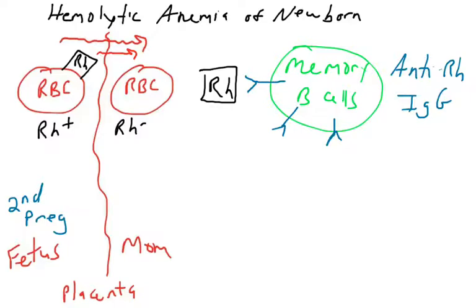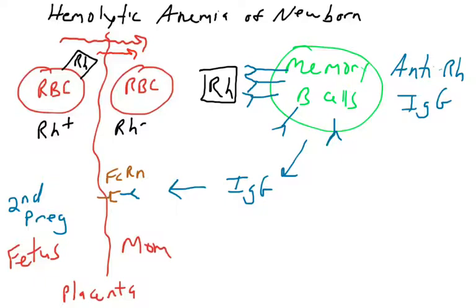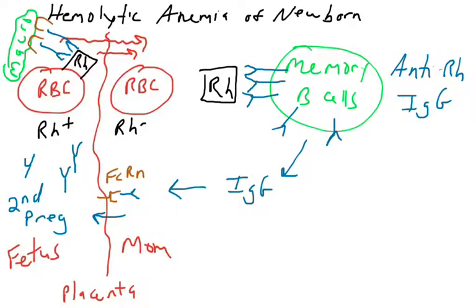Some Rh factor might leak into the mother's blood supply again, and now her memory B cells recognize it, they activate, and they start secreting IgG that will bind the Rh protein. IgG can be transported across the placenta using the Fc receptor protein, FCRN. So IgG that binds the Rh protein gets transported into the fetus's blood supply. Now there are antibodies that will bind the Rh protein on the fetus's red blood cells. When IgG recognizes an antigen, it can cause macrophages — via their Fc receptors that bind IgG — to bind this complex and phagocytose the red blood cells through opsonization.